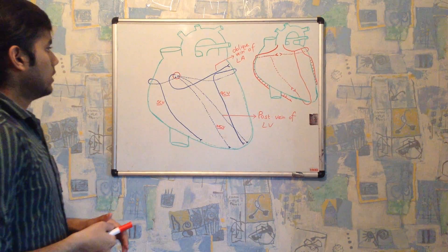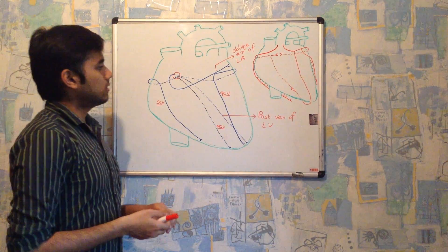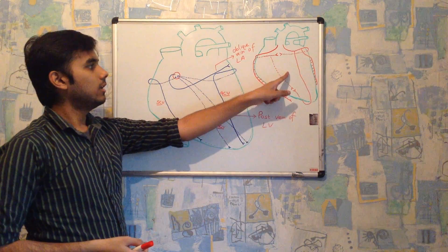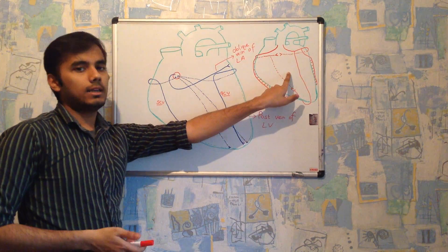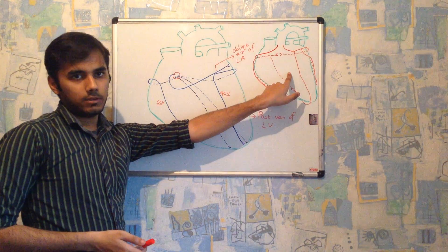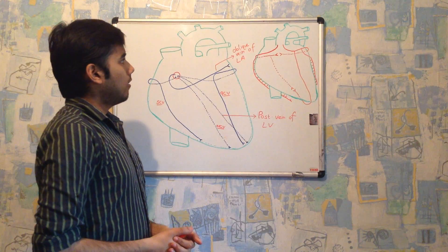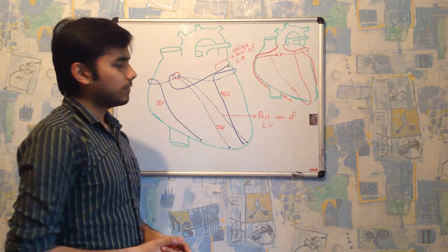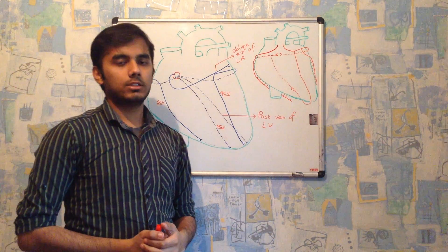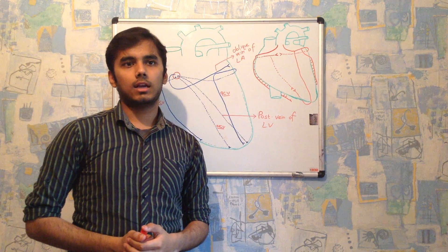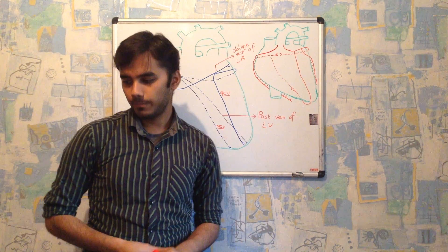This concludes the venous drainage and arterial supply of the heart — the end of the vessels of the heart topic. The next video will be regarding the cardiac cycle.